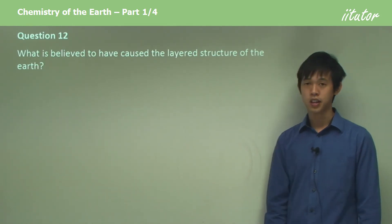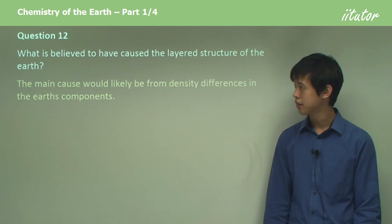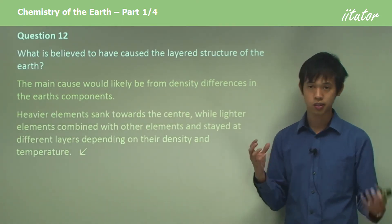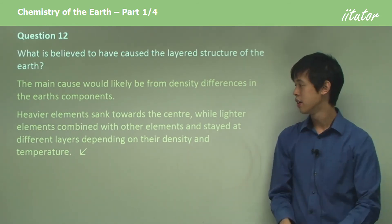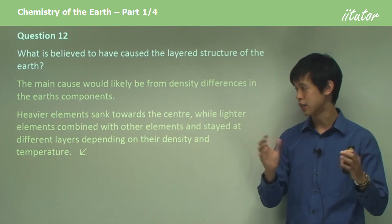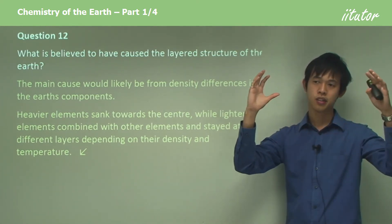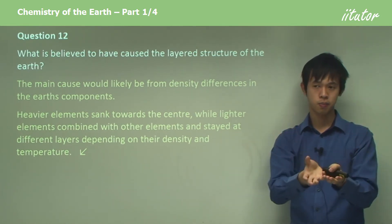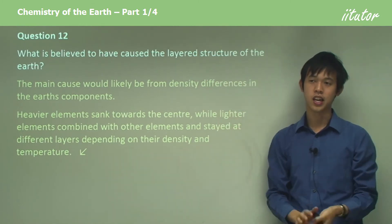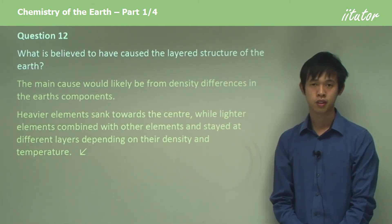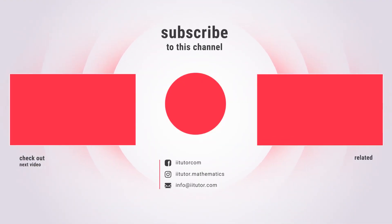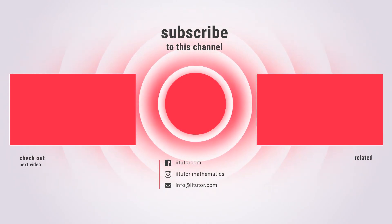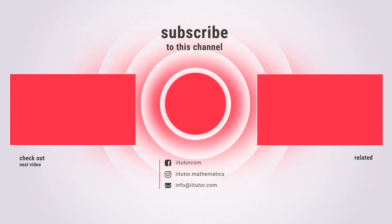What is believed to have caused the layered structure of the Earth? The main cause would likely be density differences in the Earth's components. Heavy elements sank towards the center, while lighter elements combined with other elements and stayed at different layers depending on their density and temperature. The lighter elements sank less, and when they reached the very dense sections they would have floated on top, creating the layered structure that we see on the Earth.